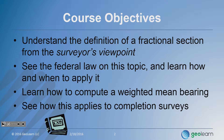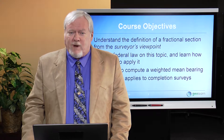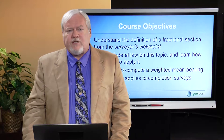This will require us to learn how to compute a weighted mean bearing, which is generally the preferred solution with some exceptions. Then we'll see how all of this applies to completion surveys — and the reason for that is because completion surveys and a subset, extension surveys, will often create fractional sections in places you might not even expect them to be.